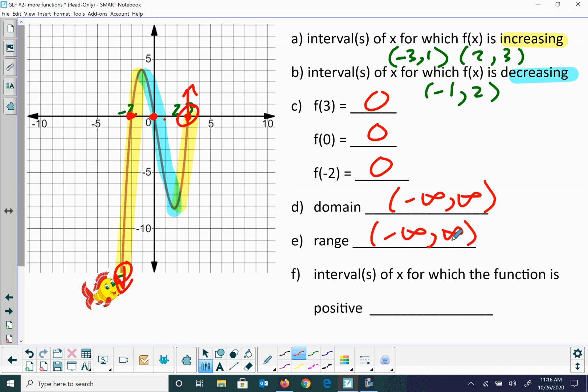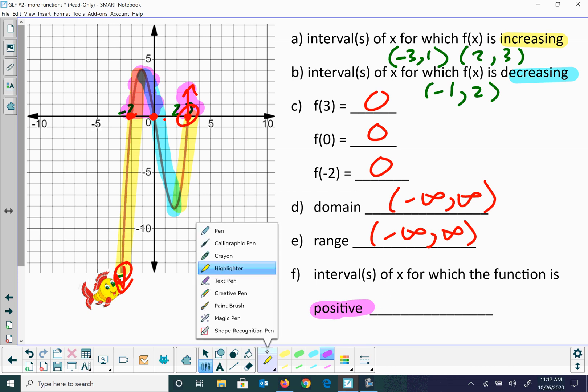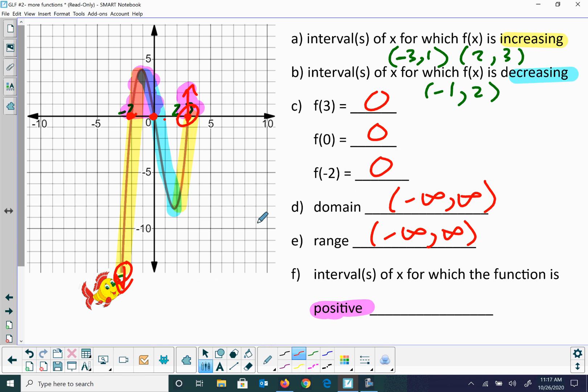The intervals for where the graph is positive - this means something a little different now. Positive means where is our graph above the x-axis, so it's in those regions there. We're going to go ahead and list from negative two to zero, it's going to be above, with rounded brackets.